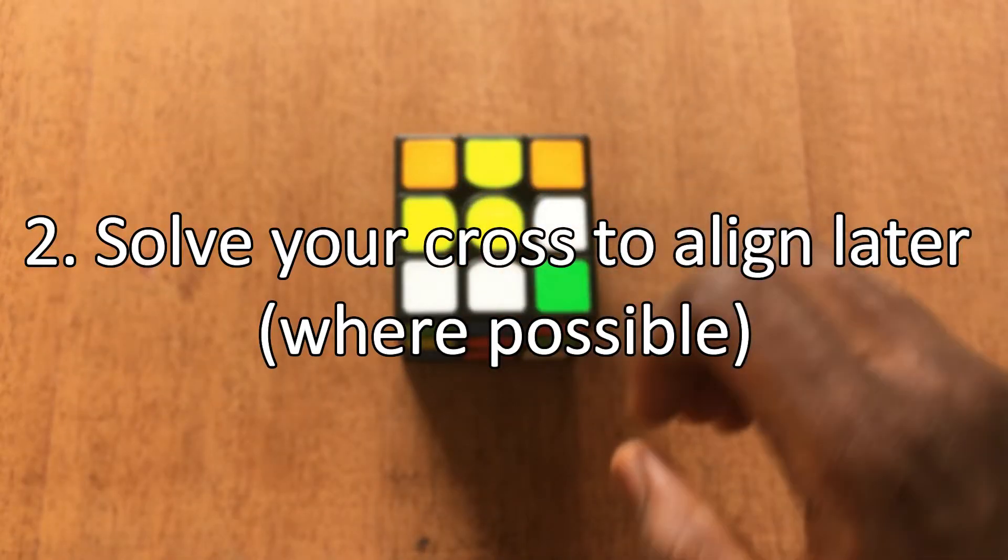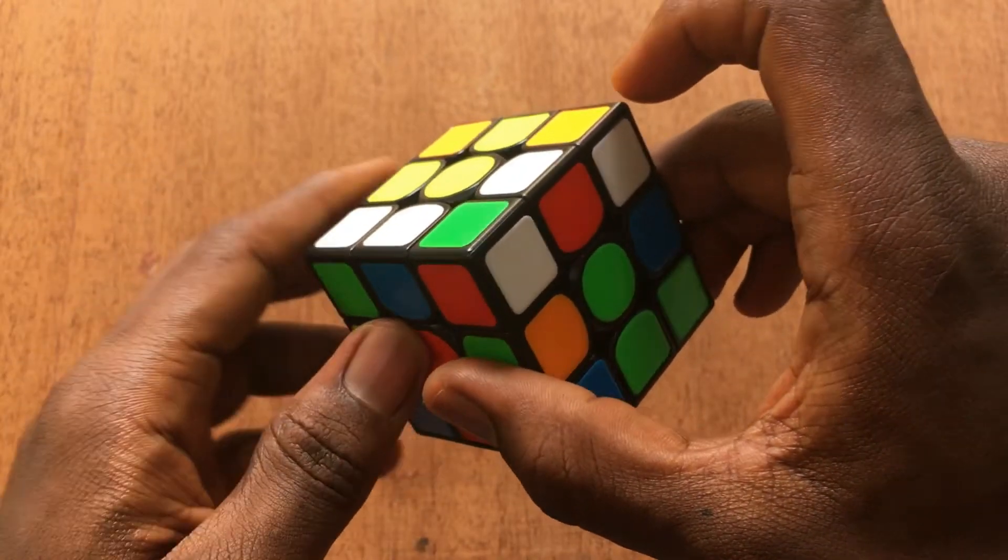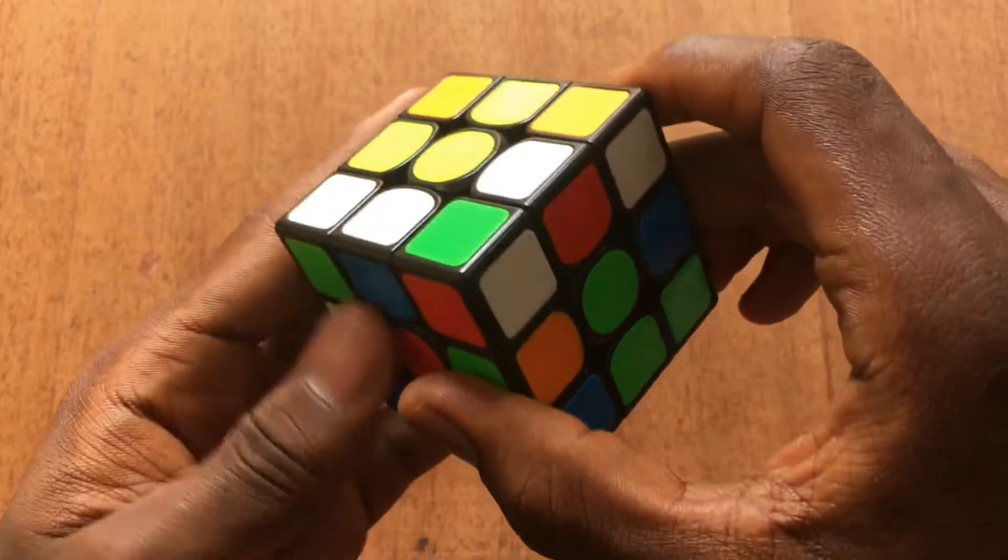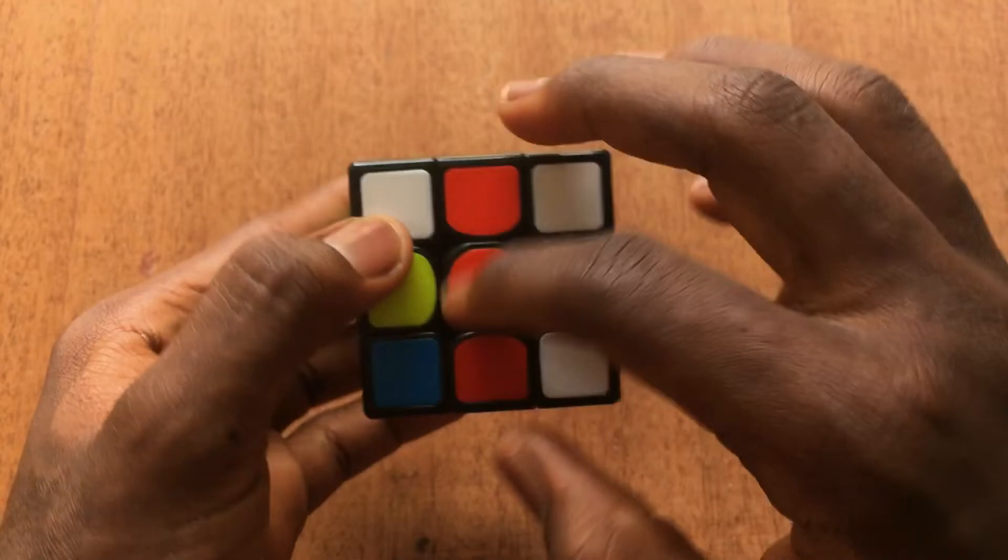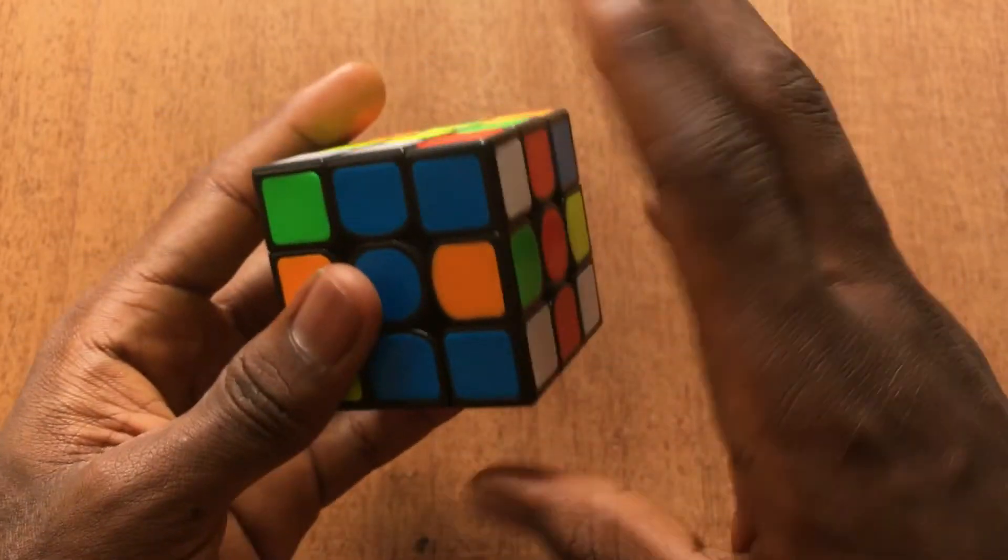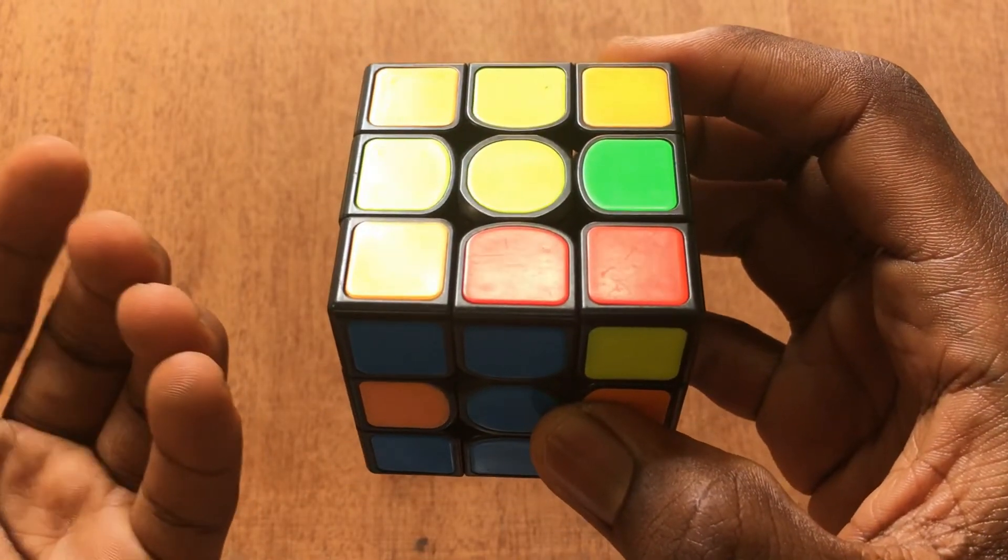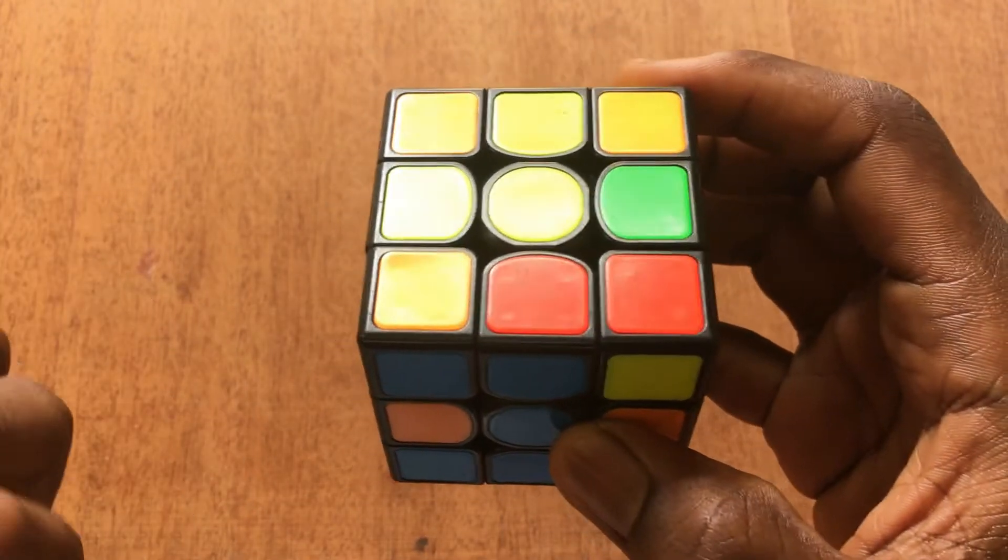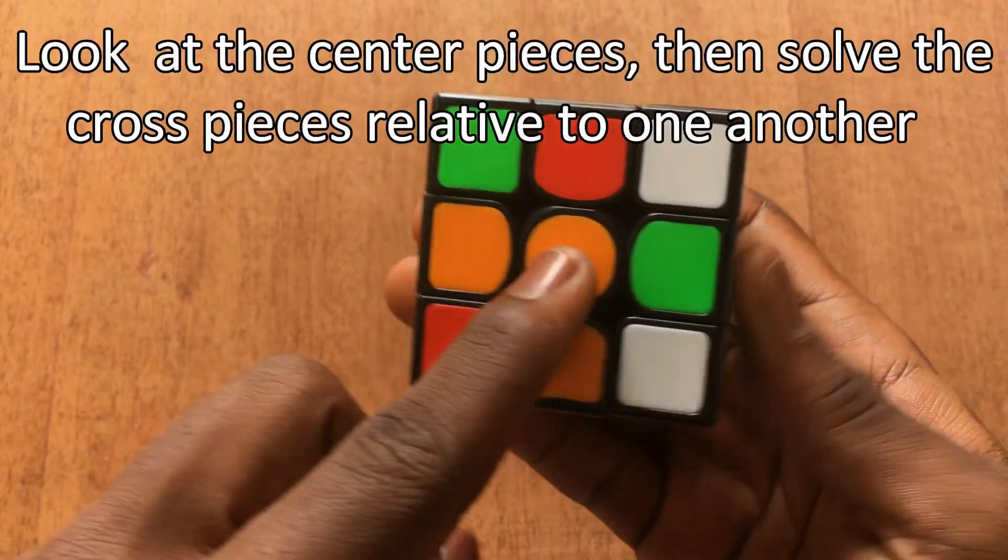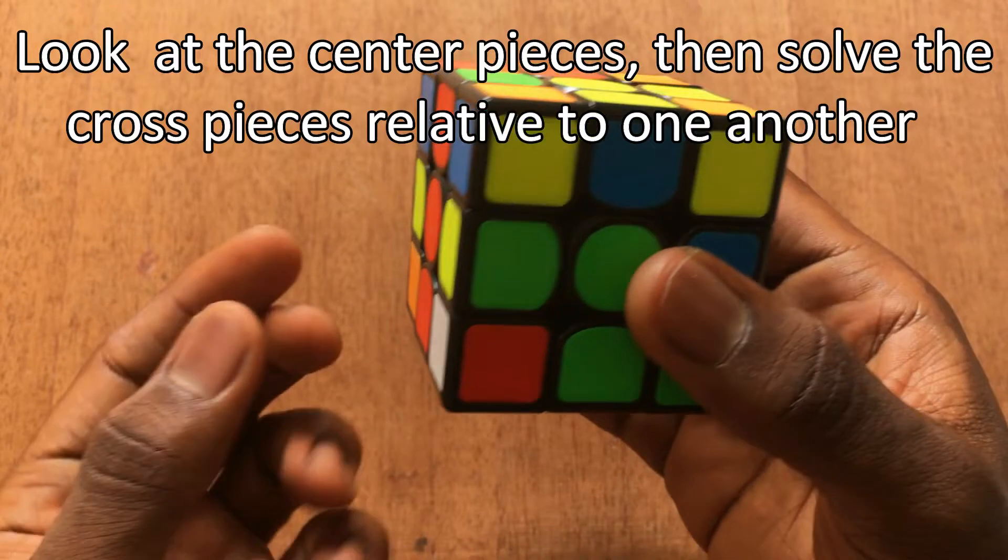Tip number 2: solve your cross to align later. The beginner's method taught us to align our cross pieces as we solve. For example, I see this red white edge, I align it with the red center, bring it down, then I see the blue already aligned, I'll do this. Now we are to neglect all of this and find a method that will enable us solve our cross faster. The way we can do this is just to look at the center pieces and solve our cross pieces relative to one another.